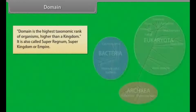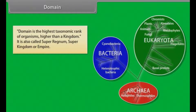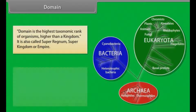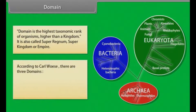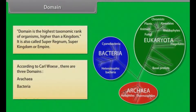Domain is the highest taxonomic rank of organisms, higher than a kingdom. It is also called super regnum, super kingdom, or empire. According to Carl Woese, there are three domains: Archaea, Bacteria, and Eukaryota.